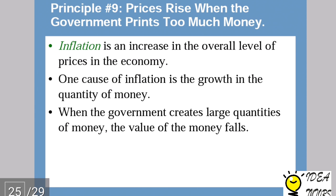The ninth principle is: prices rise when the government prints too much money. Inflation is an increase in the overall level of prices in the economy. One cause of inflation is the growth in the quantity of money supplied in the economy. When the government creates a large quantity of money, the value of money falls. If the government prints more money, the supply of money increases, which increases people's income, which increases demand for commodities — and this rise in demand leads to higher prices, which is inflation.